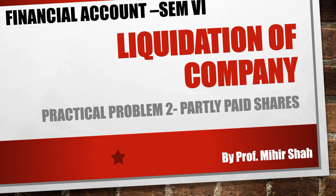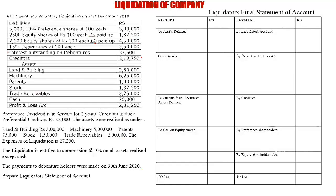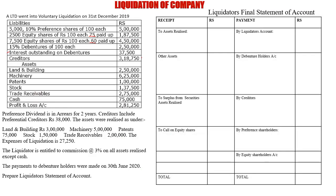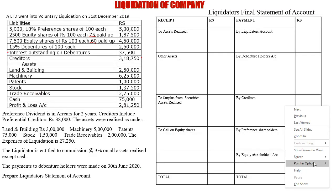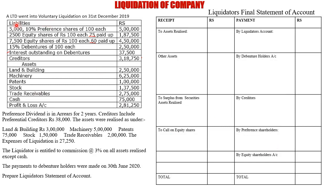Now let us see how we solve this particular kind of sum. This is the question which is given: A Limited went into voluntary liquidation on 31st December 2019. This is an important date — the company is going into liquidation.